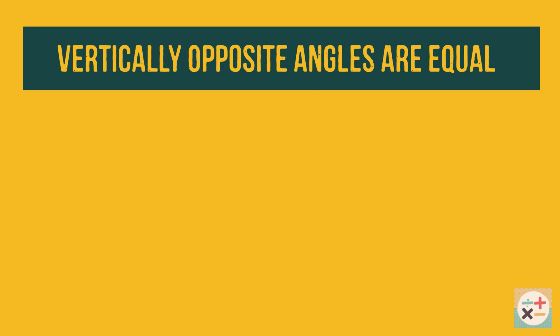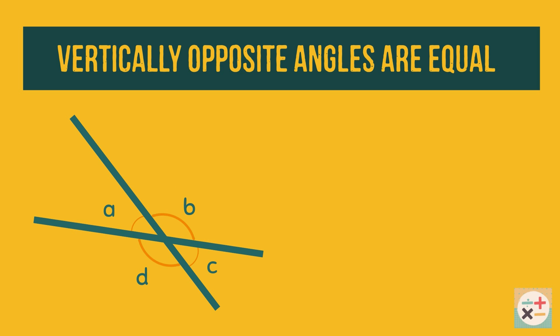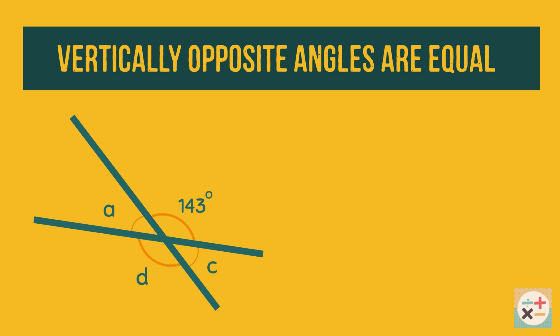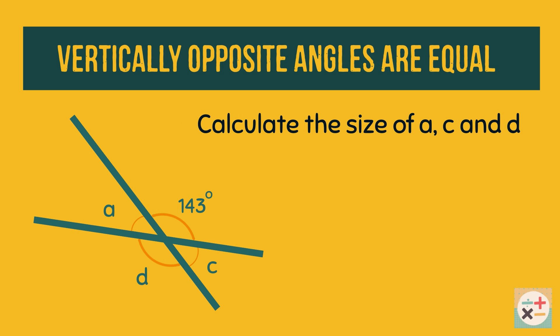When we have two straight lines which cross, the angles vertically opposite each other at the vertex are equal. Here, angles A and C are equal, and angles B and D are equal. Let's look at this example question: D is vertically opposite to the 143-degree angle, therefore D is also 143 degrees.